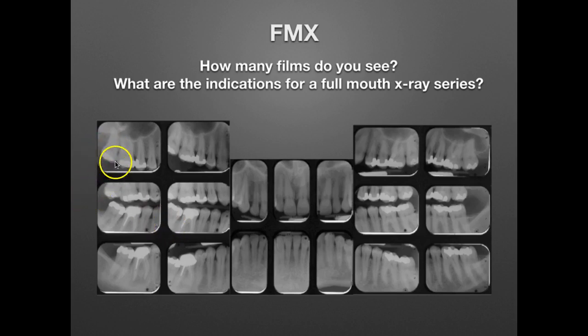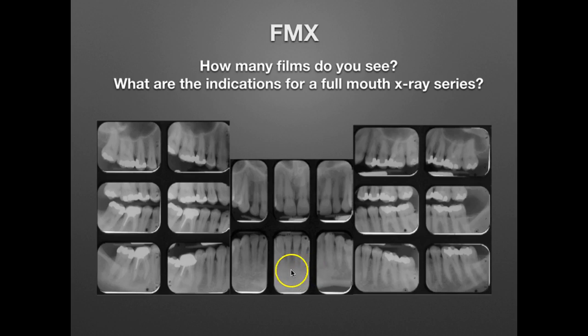Dental disease such as caries or periodontal disease — because the dentist can see the bone level in these images. Perhaps they're going to look at the apical area, the apex of a root of a tooth, to see if there is an abscess present. Are there any impacted teeth? Those can be seen in periapical images. Are there any cysts or tumors? These are the types of dental and oral conditions a dentist would diagnose using FMX periapical images.